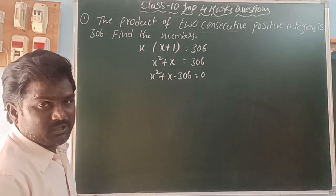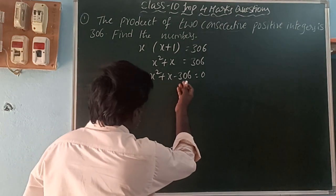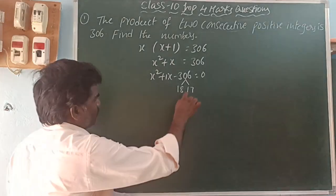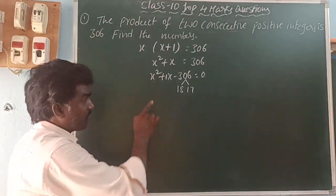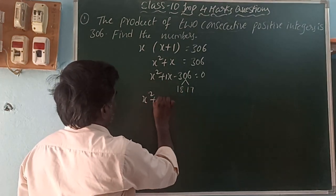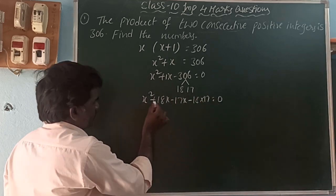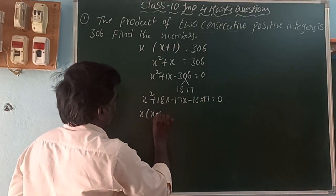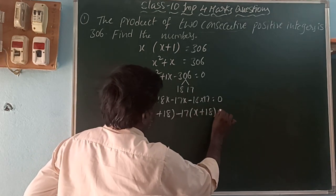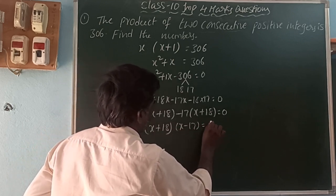We can find the factorization or use the quadratic formula: x equals minus b plus or minus square root of b squared minus 4ac, divided by 2a. Now 306 can be written as 18 times 17. Using these two factors, we write x squared plus 18x minus 17x minus 18 times 17 equals zero.